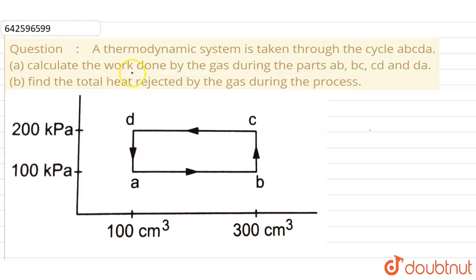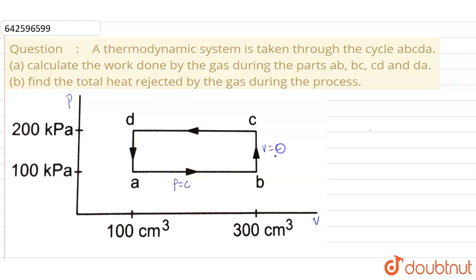Looking at the graph, the vertical axis represents the pressure and the horizontal axis represents the volume, so it is a PV chart. The process AB represents a constant pressure (isobaric) process. The process BC represents an isochoric process (volume constant). Similarly, process CD is also isobaric, and process DA is isochoric.